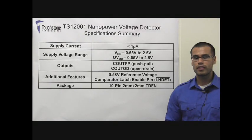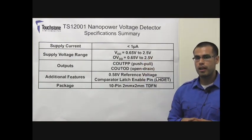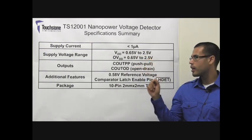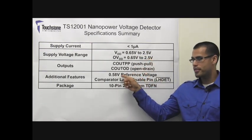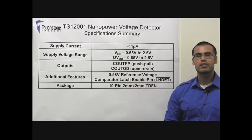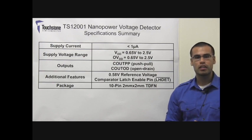In essence, the TS-12001 consumes less than a microamp of supply current, can operate at a supply voltage range of 0.65 volts to 2.5 volts. It has two outputs, along with a 0.58-volt reference and a latch-enable function, and it is available in a small 10-pin 2x2 TDFM package. This makes the TS-12001 an excellent low-power solution in battery-powered applications. I am Javier Solorzano, Senior Applications Engineer at Touchstone Semiconductor. Thank you for watching.